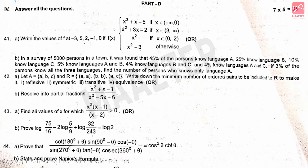Part D: 5 mark section questions. Attend all questions; each question carries 5 marks, total 35 marks. In this section there is an A or B choice.